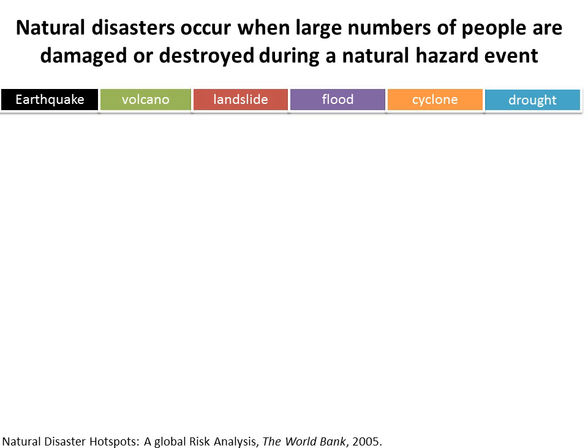So first, let's define natural disasters. Natural disasters occur when large numbers of people or economic assets are damaged or destroyed during a natural hazard event. Earthquake, volcano, landslide, flood, cyclone, and drought are six major natural hazards.